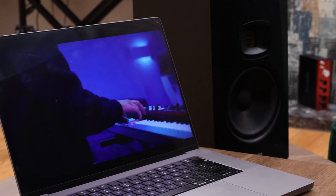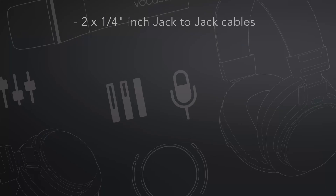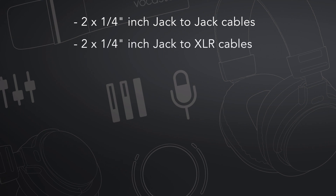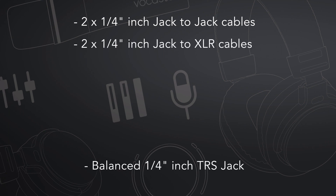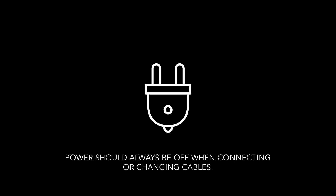To connect active speakers to your Vocaster 2, you need either quarter-inch jack-to-jack cables or quarter-inch jack-to-XLR cables. We recommend using balanced TRS quarter-inch jack cables for the best results. Ensure your speakers are connected to power, but don't switch them on just yet, as this can cause damage when connecting cables.